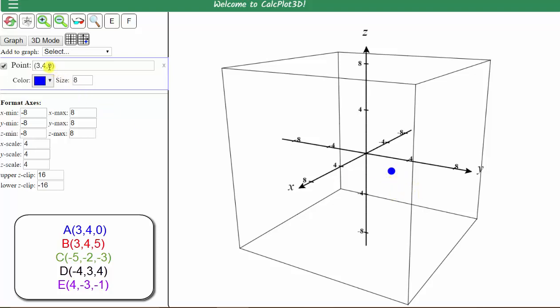Notice for this order triple, the z-coordinate is zero, and therefore this point is in the xy-plane.